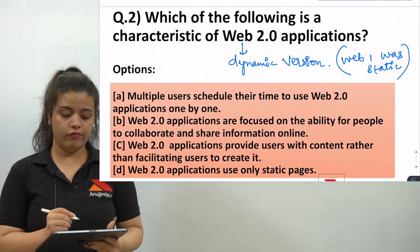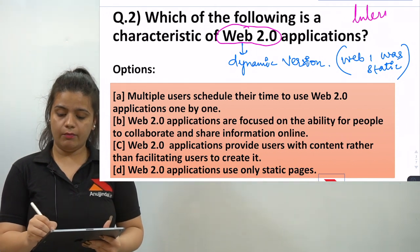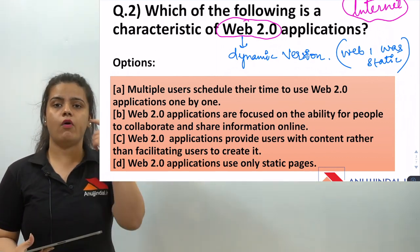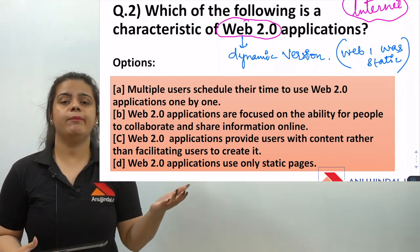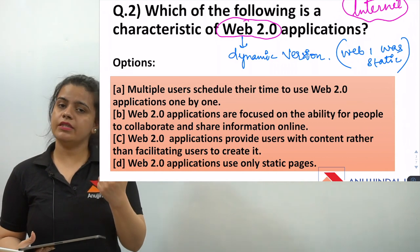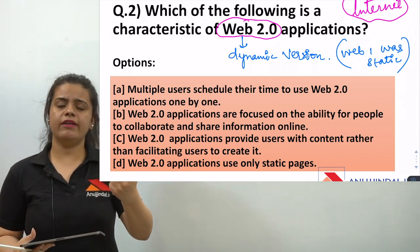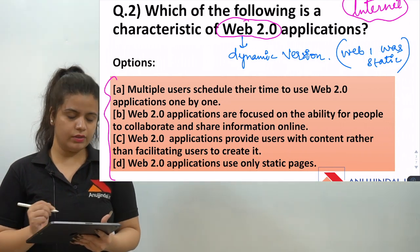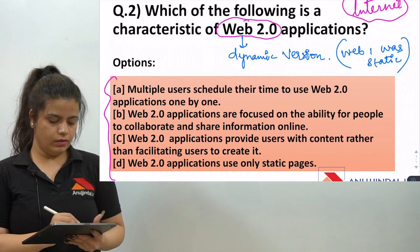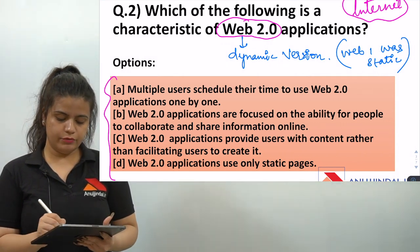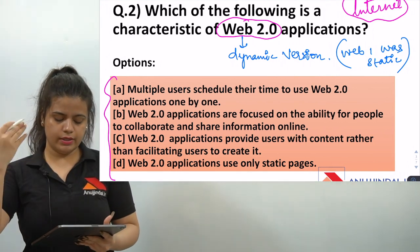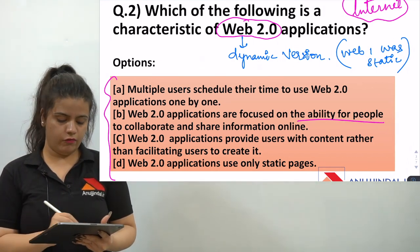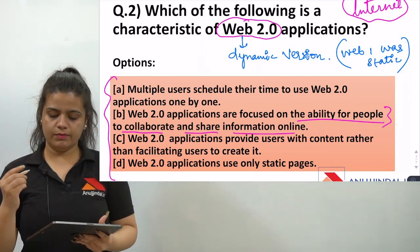The second question is about Web 2.0. Always remember, internet topics are very important for UGC MTA NET — IP addresses, web browsers, and web versions. The question asks which definition best describes Web 2.0. Option A: multiple users schedule their time to use Web 2.0 applications one by one. Option B: Web 2.0 applications are focused on the ability for people to collaborate and share information online.